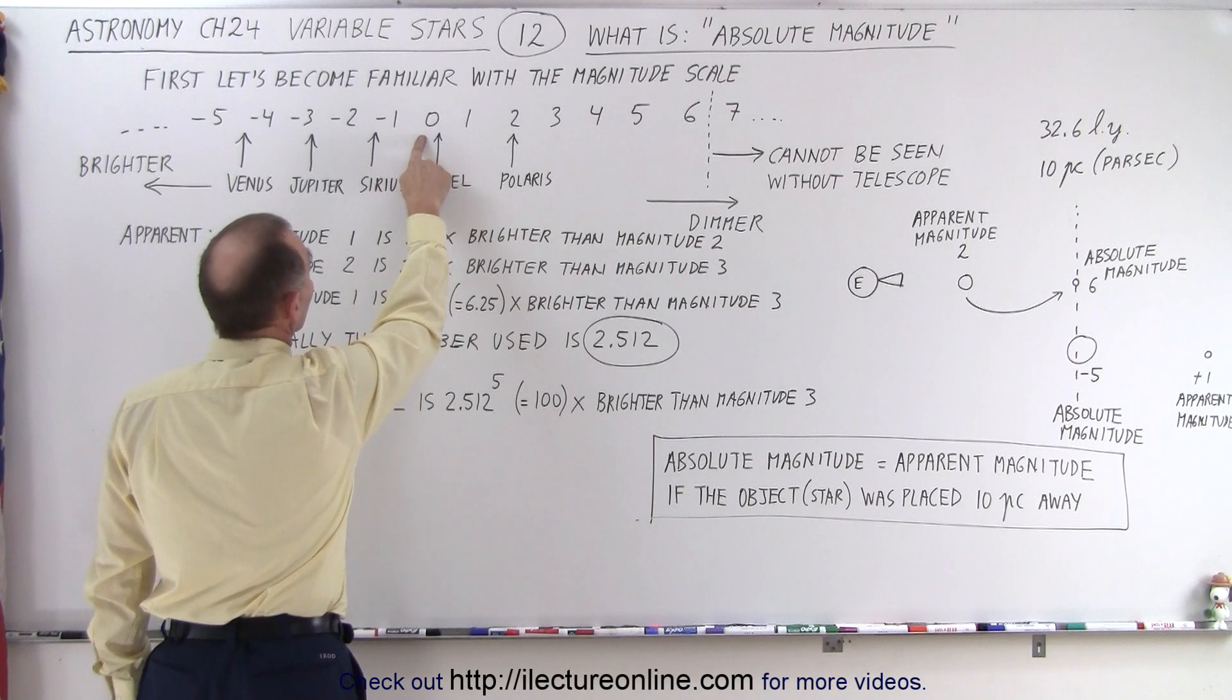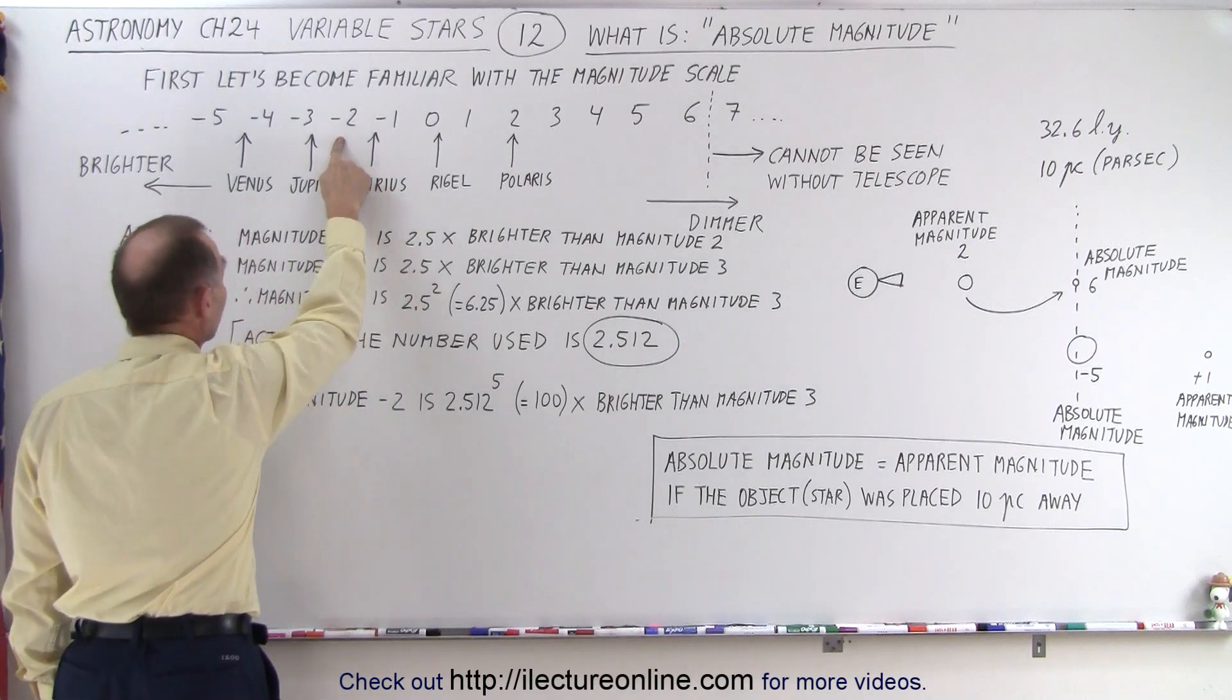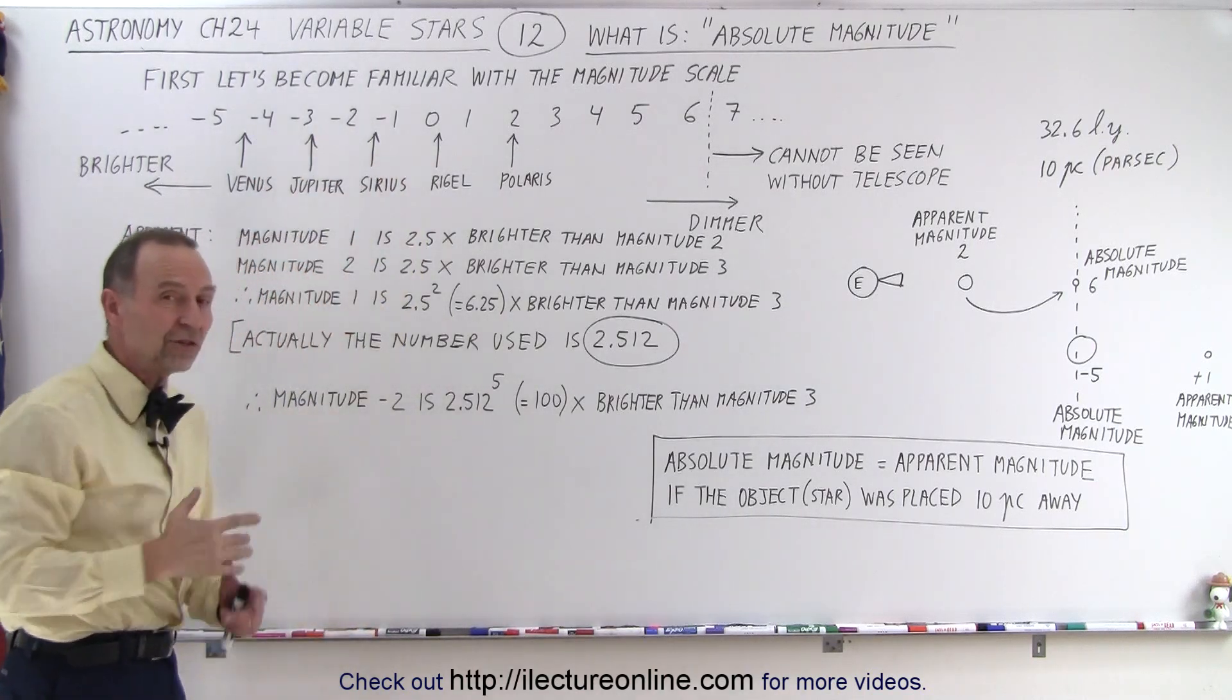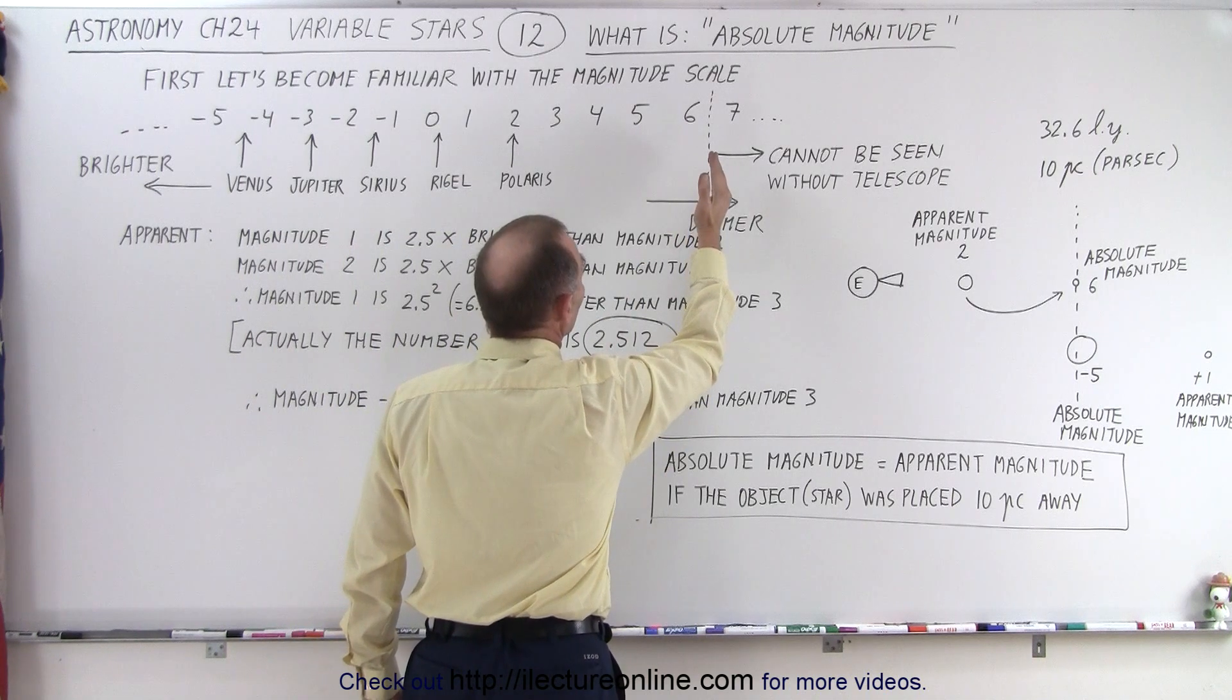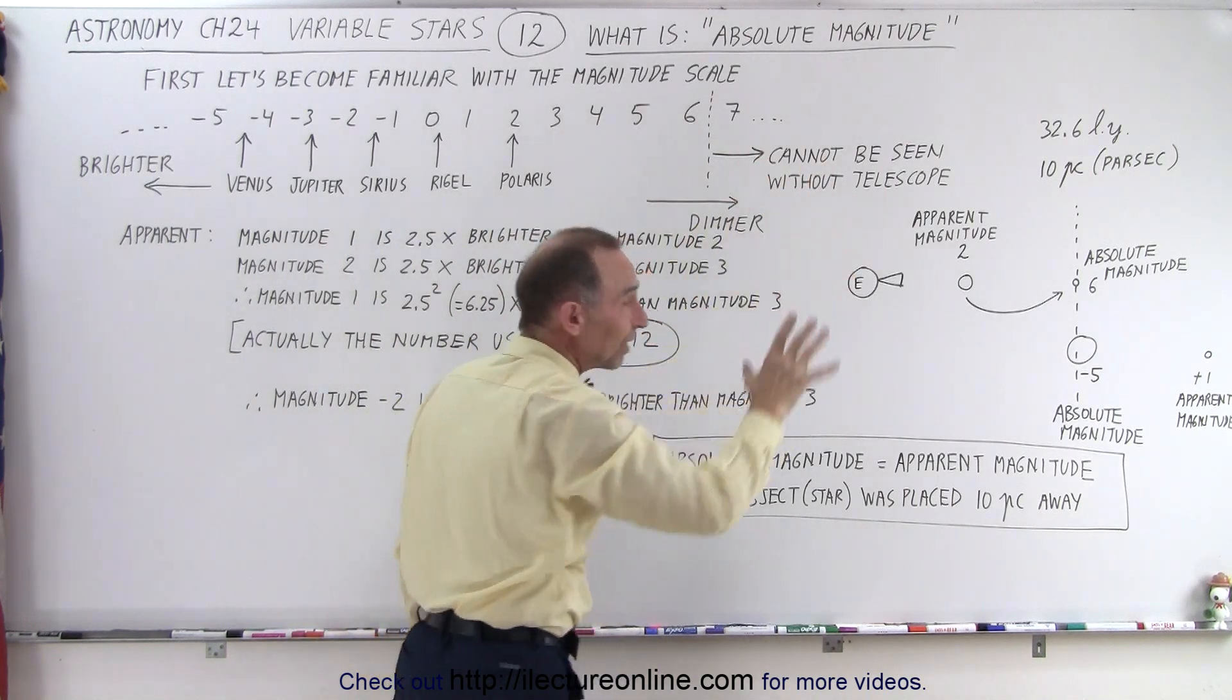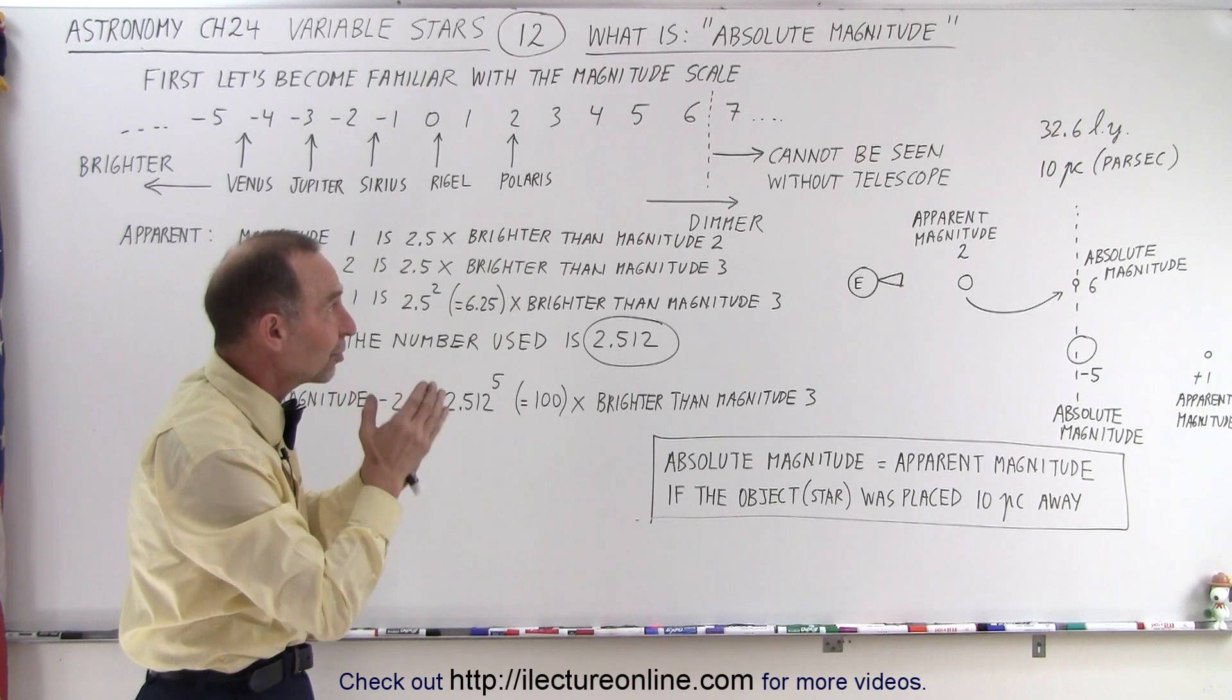It turns out the smaller the number the brighter, the bigger number the less bright or the dimmer it is. So in other words, an object with magnitude zero brightness is brighter than an object with magnitude two, or negative two is brighter than zero, or negative four is brighter than negative two. To the left on the scale is brighter, to the right of the scale is dimmer. Now objects that have a magnitude that are dimmer than six, like seven, eight, or nine, those things cannot be seen with the naked eye.